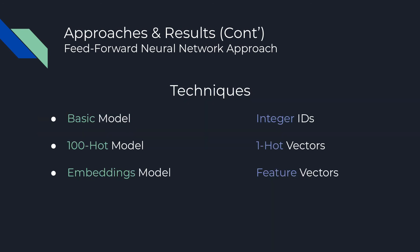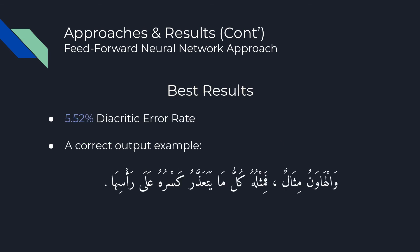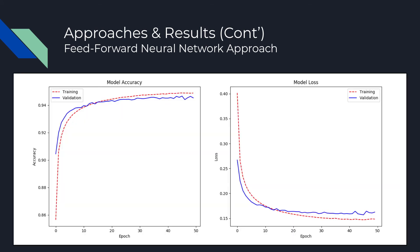We tried three techniques to enhance the results of the model: mapping characters to unique integer IDs, mapping each character to its one-hot representation then concatenating the representations, and using an embedding matrix to represent features for each character. The best results for this approach was 5.52% diacritic error rate, while the model was able to diacritize an Arabic sentence with zero errors. Training and validation curves confirm that the model did not overfit, as validation accuracy kept improving.